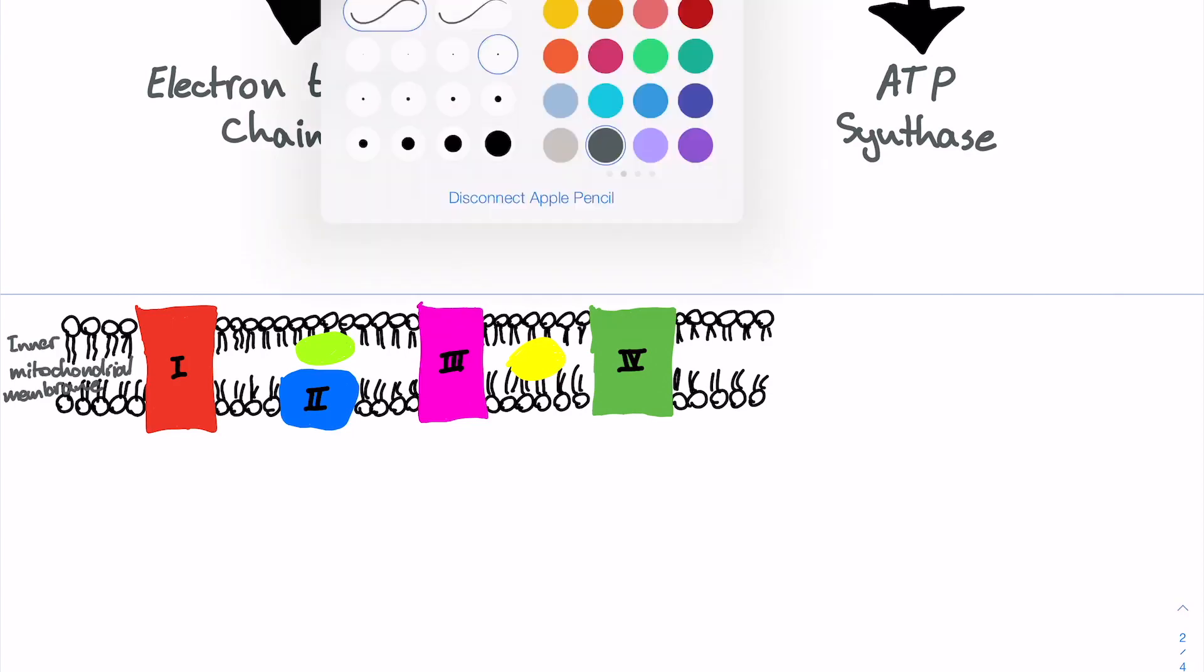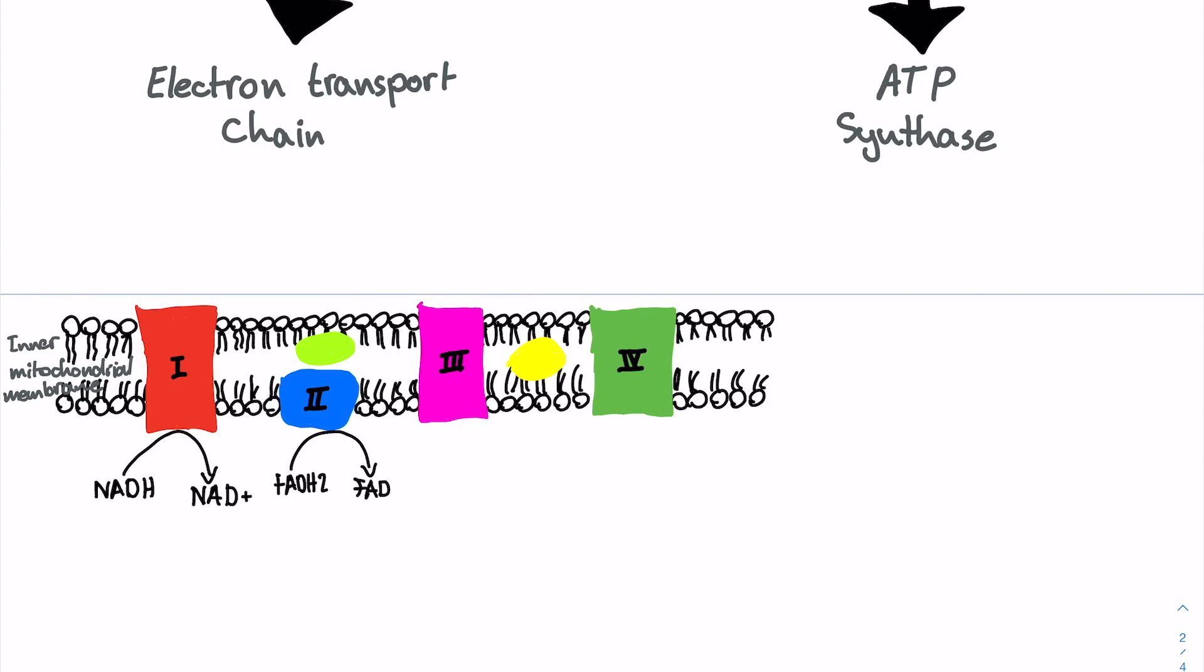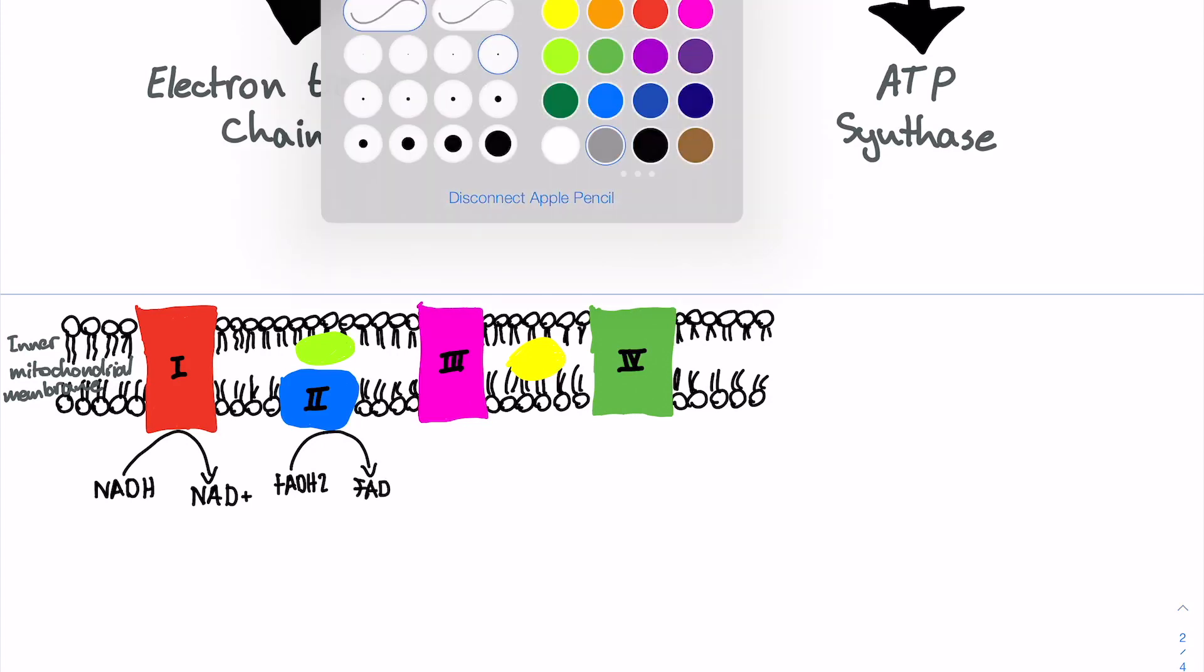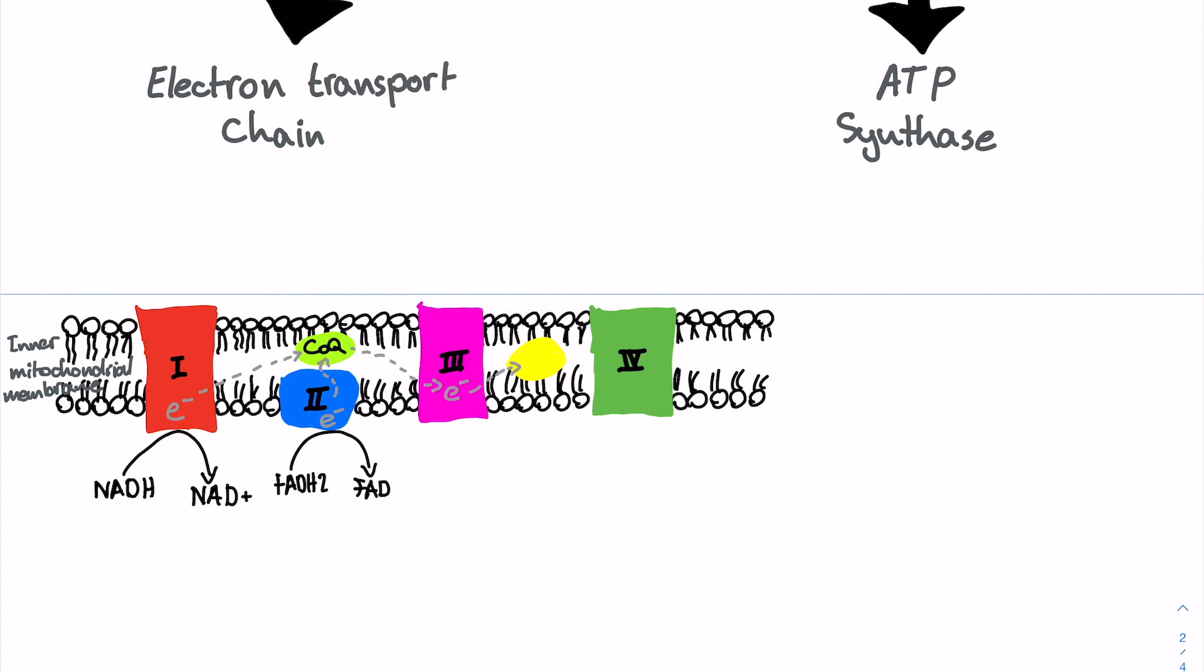NADH and FADH2 deliver electrons to complex 1 and complex 2 respectively. And through a series of mechanisms, these electrons move from one complex to the other, involving coenzyme Q and cytochrome oxidase. The electrons release enough energy so that complexes 1, 3, and 4 can pump protons from the mitochondrial matrix into the transmembrane space, creating a very important proton gradient.